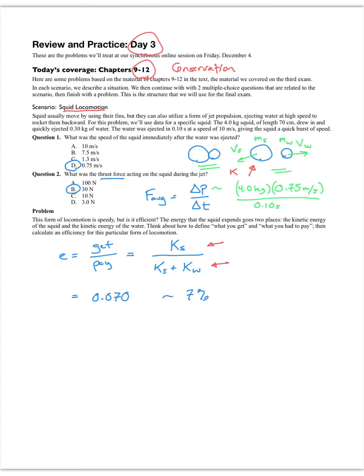7% efficient is terrible. Including the 25% metabolic efficiency, the overall efficiency is about 1.7%. This is very, very inefficient, so squid don't use jet propulsion to get around as a rule. They use it to escape — if you're about to be eaten, a costly burst is worth it. Typically they would move a larger mass at a slower speed, putting less kinetic energy into the water. That's what fish do when they use their fins.